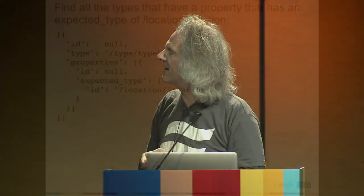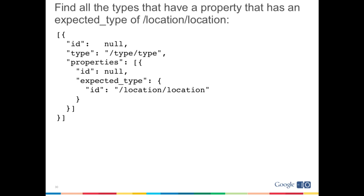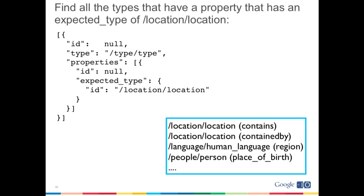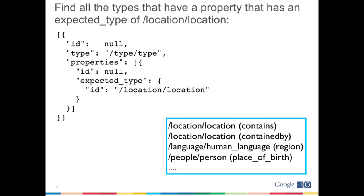Now we can build up slightly more interesting structures. We ask: for some type, give me all its properties and what the expected_type of those properties is. Find all types that have properties where the expected_type is a location. What we get back is that the location type has properties called 'contains' and 'contained by' — this is what we call the phylogeny pattern, where properties expect their own type on the other side, creating hierarchies. We also get human language back, where region is a location, and place_of_birth on /people/person has an expected_type of location as well.